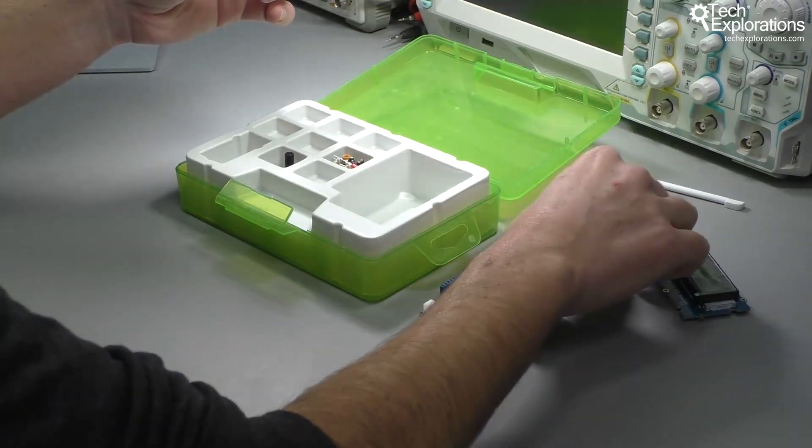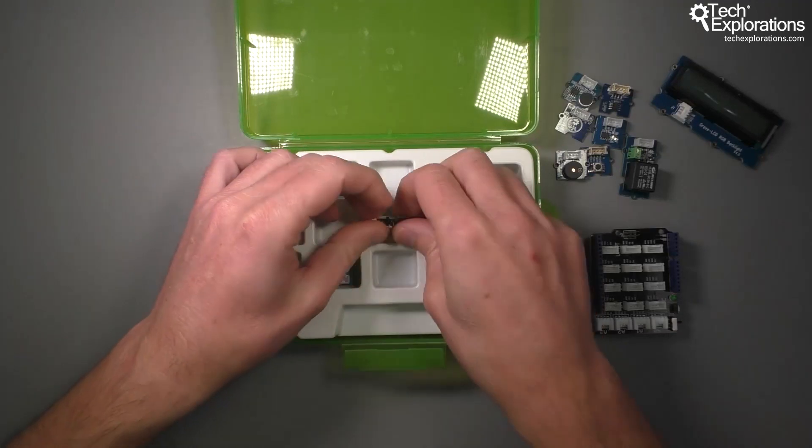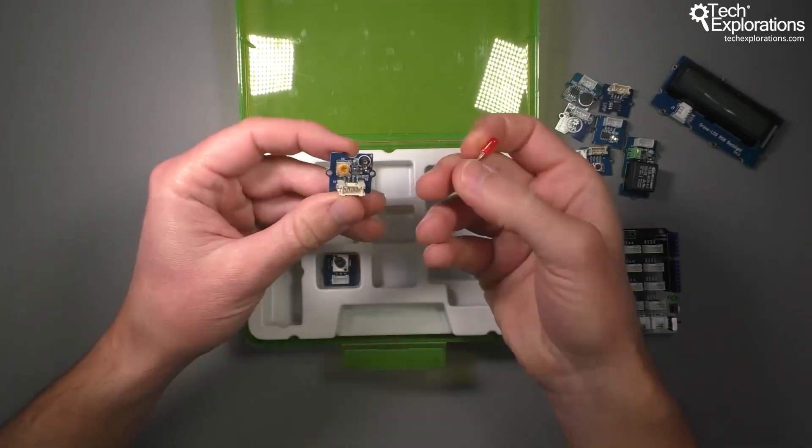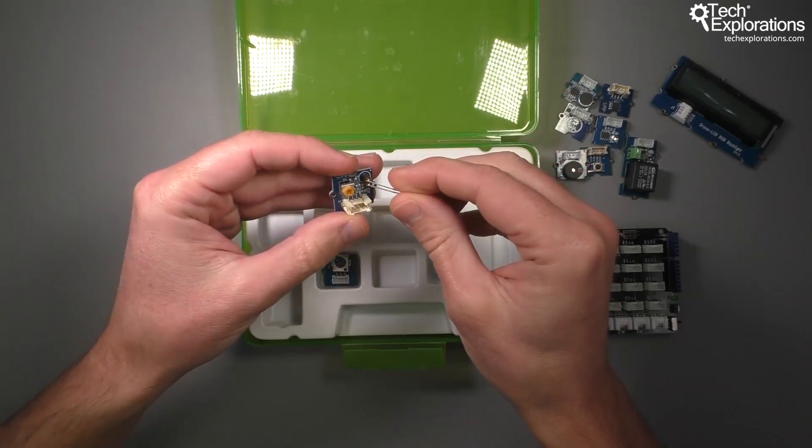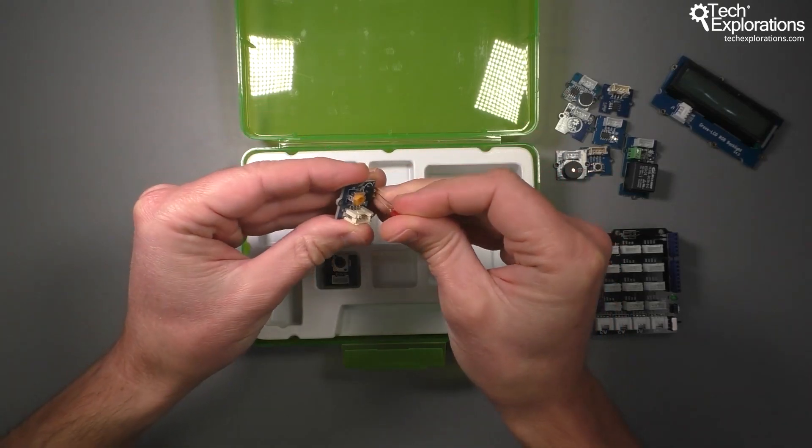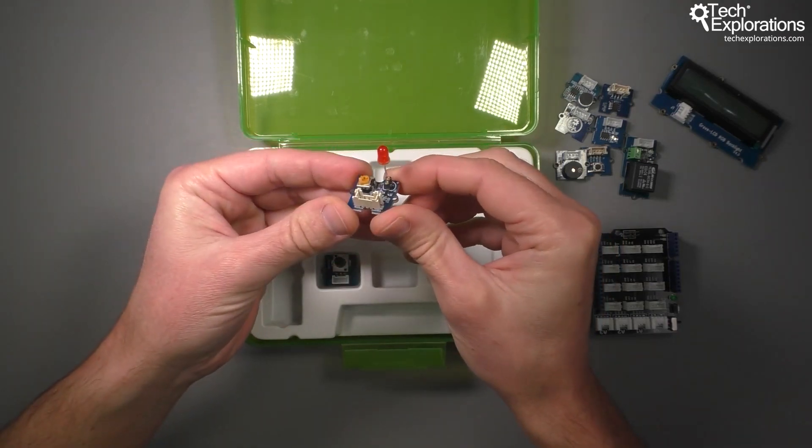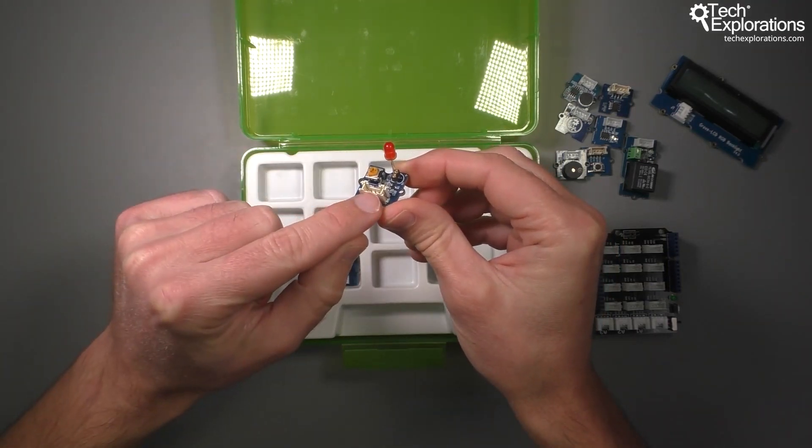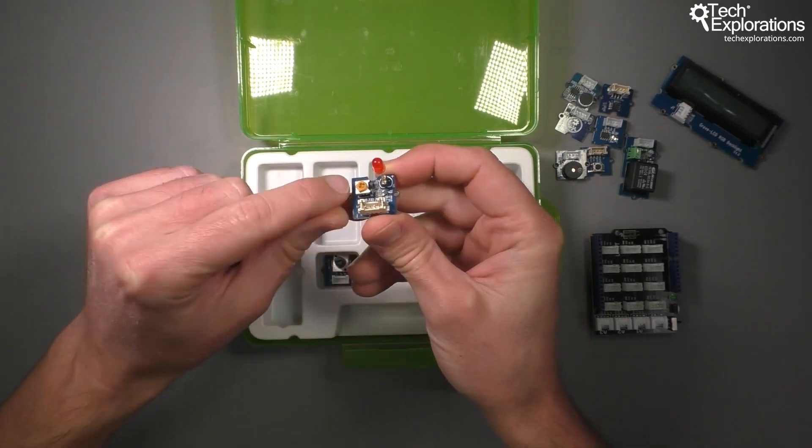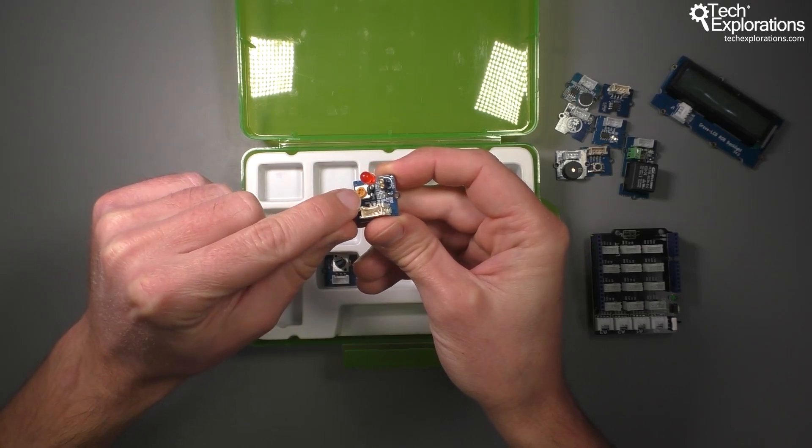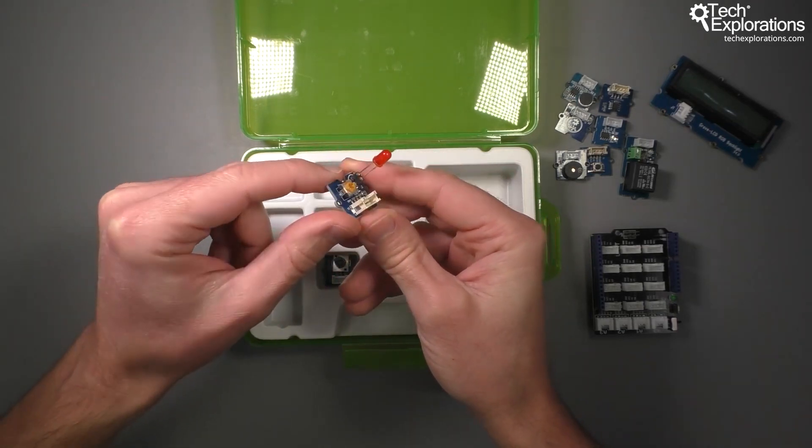Next up we've got a module that we can use to control an LED. We can simply plug in the LED in the socket here and then with the connection to the shield we'll be able to control whether the LED is turned on or off. With this little potentiometer we can actually control the intensity of how much light is coming out of the LED.